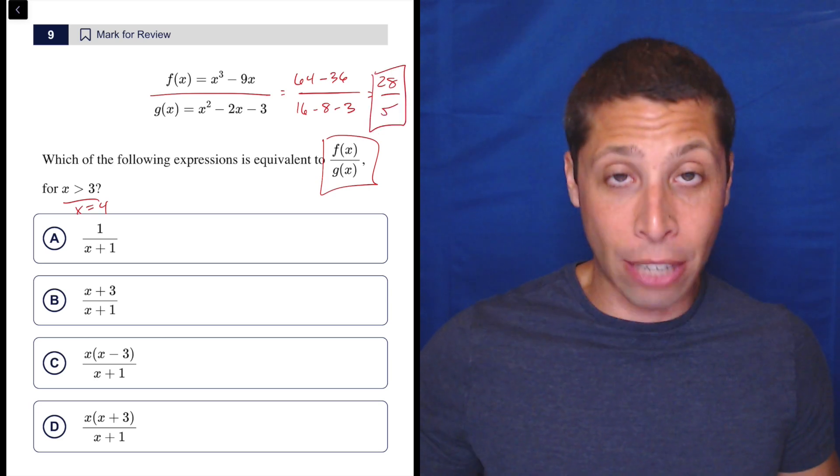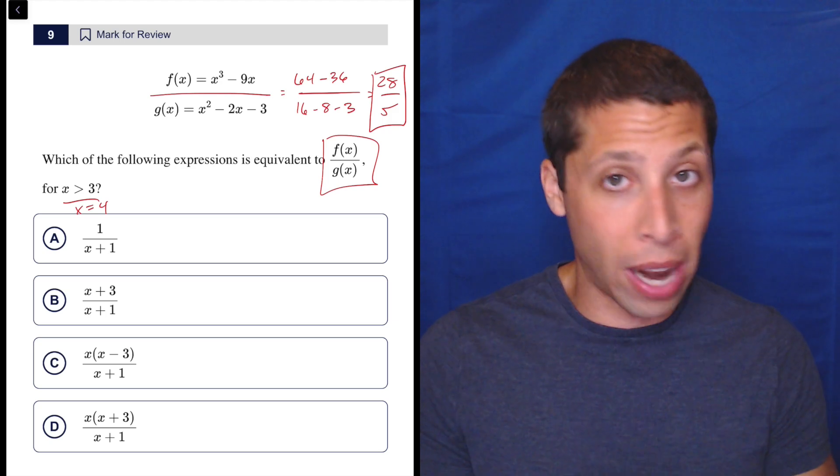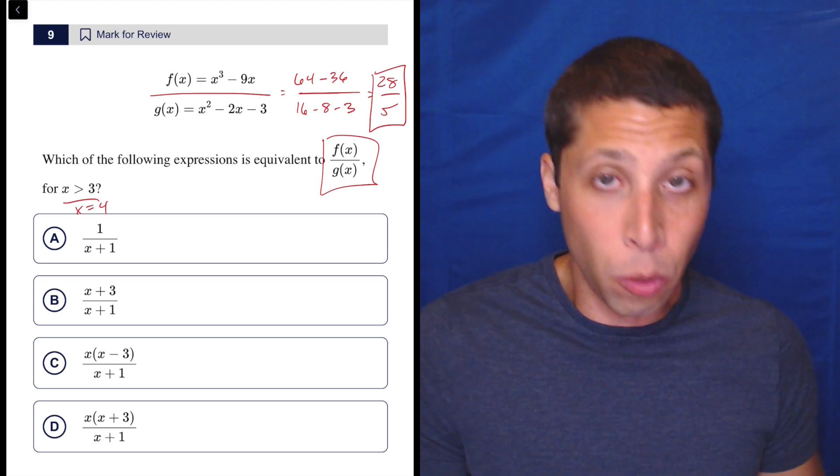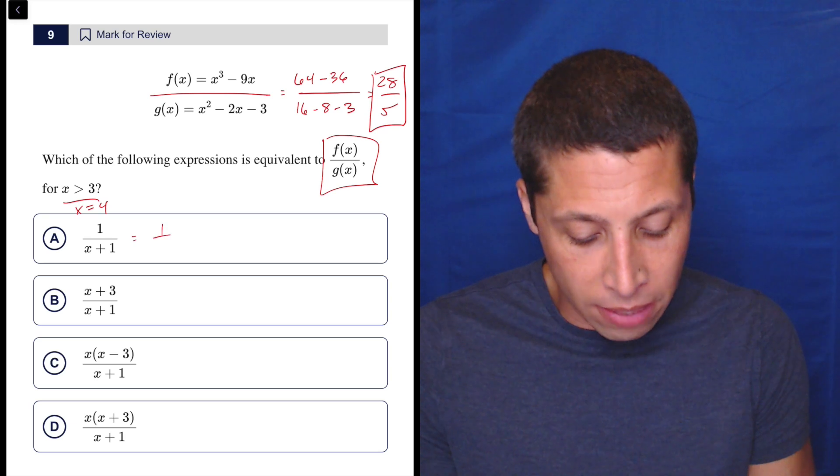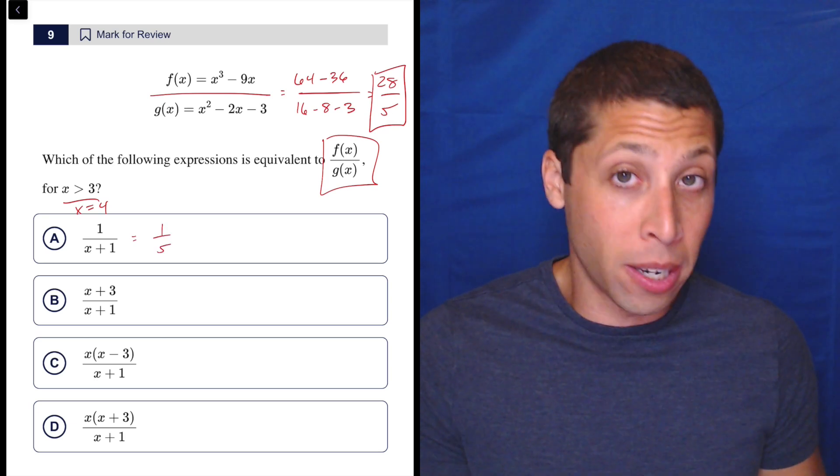So kind of a messy number, but it's a fraction and notice that all the answer choices are fractions as well. So whatever, it'll work itself out. I can also see very quickly that choice A isn't going to work because if I put in four, I get one over five. That's not right.